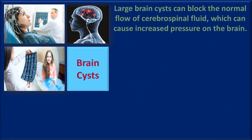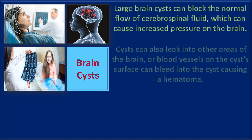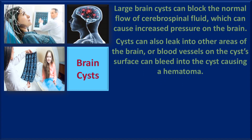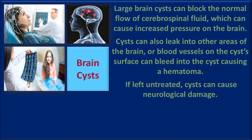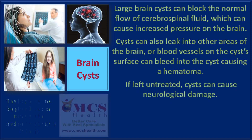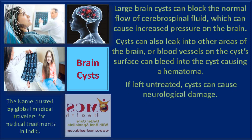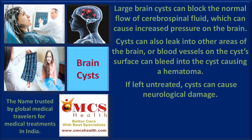Large brain cysts can block the normal flow of cerebrospinal fluid, which can cause increased pressure on the brain. Cysts can also leak into other areas of the brain, or blood vessels on the cyst surface can bleed into the cyst, causing a hematoma.